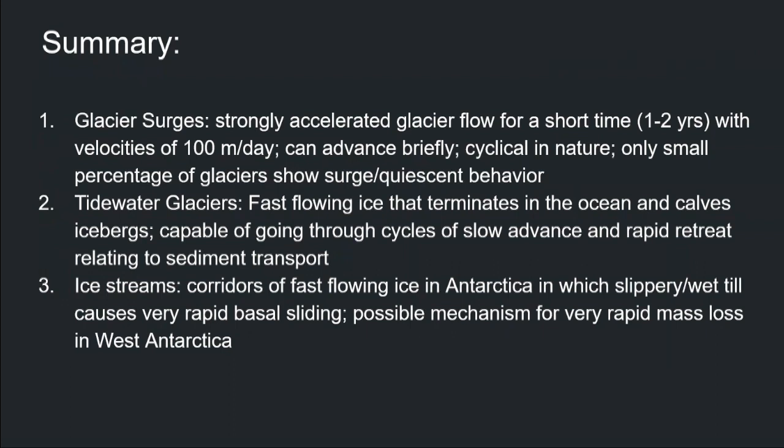Let's wrap up this lecture. Glacier surges happen in two phases. We have the quiescent phase where the glacier is not moving that much — pretty slow — and that lasts for a much longer time than the surge itself, where the glacier's velocity increases by more than an order of magnitude over a pretty short amount of time. Those surges in Alaska are suspected to be related to the underlying subglacial drainage system. What is associated with the surge is a collapse of the accumulation area, a thickening of the ablation area — a mass transfer from the top of the glacier to the bottom.